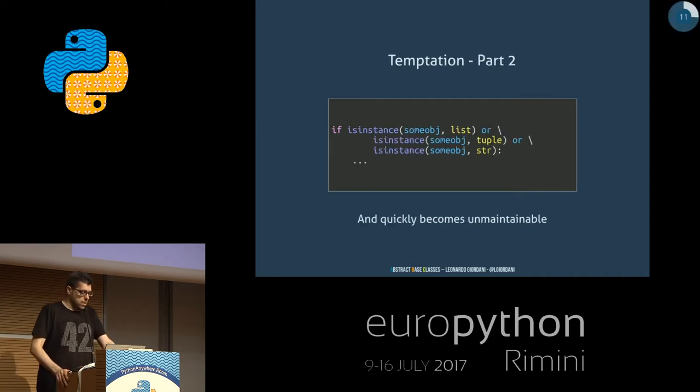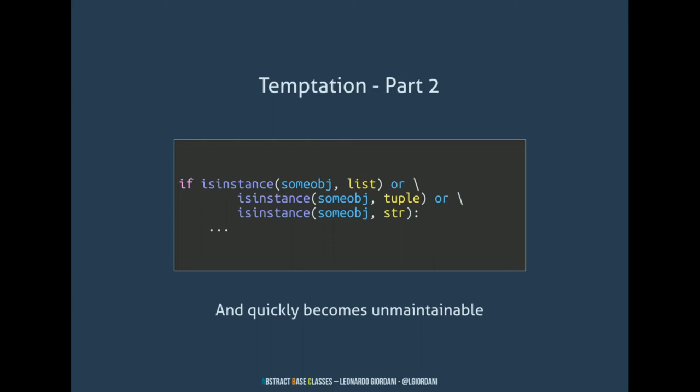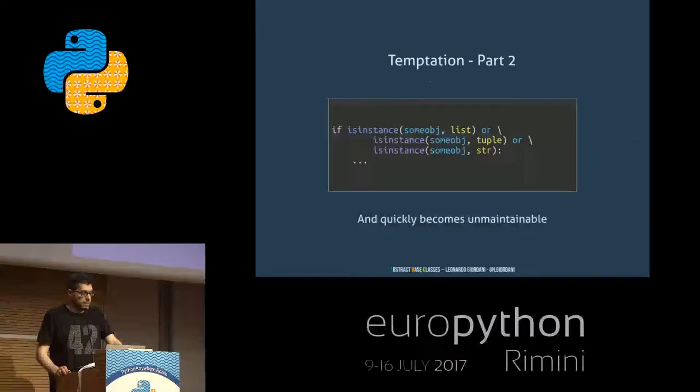More than that, if I start saying I want an object which is a list or a tuple or a string — because I'm checking for something that can be sliced — I have to list all three. And then someone invents a new tuple or whatever and I have to add it. So it becomes unmaintainable very quickly.